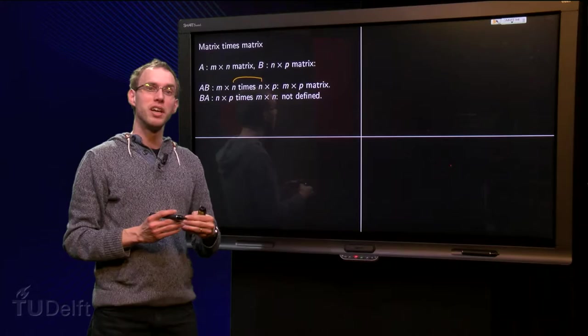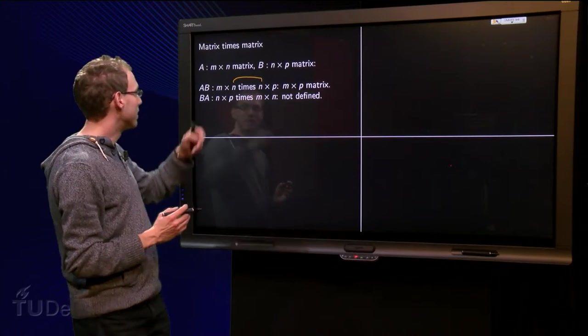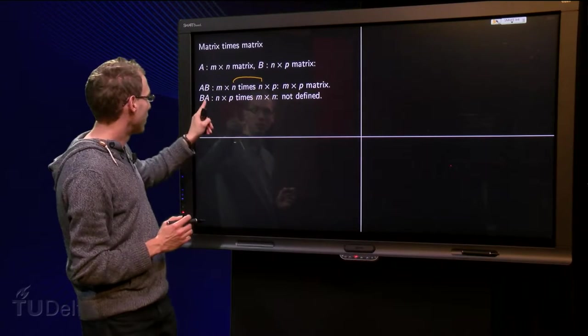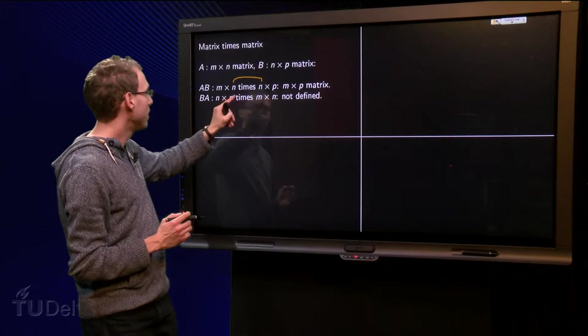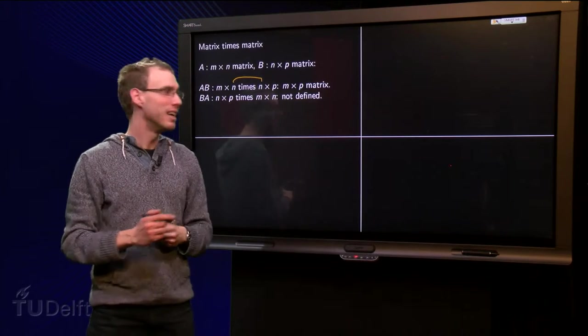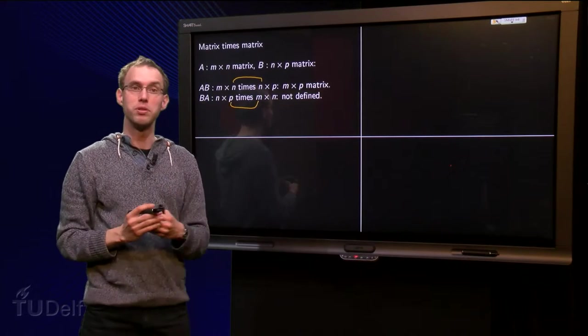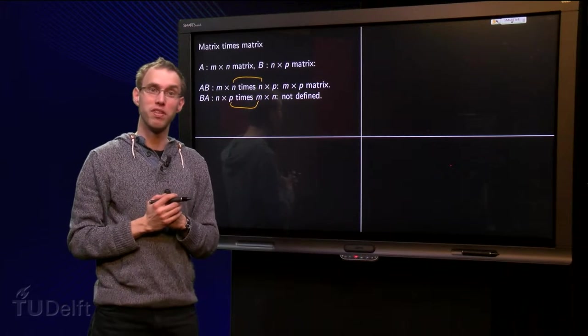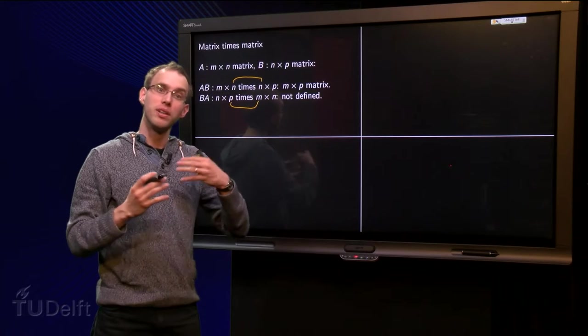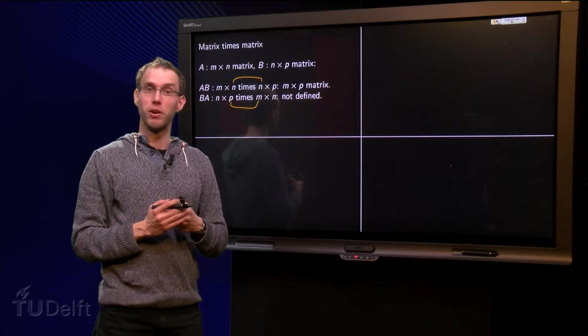Now let's look what happens if you would try to compute B times A. Then we will try to compute N times P times M times N. Now you see these over here are not the same, so B times A would not be defined.